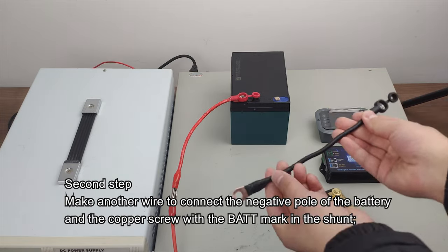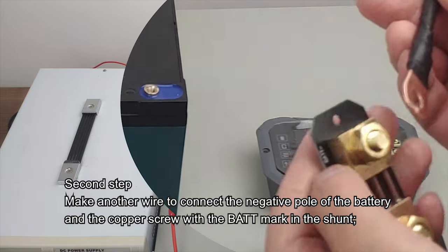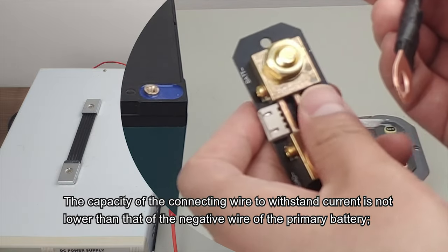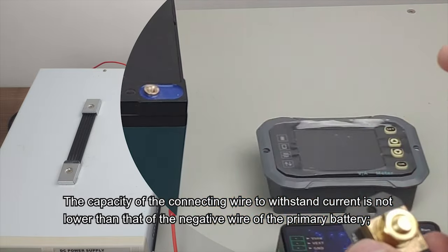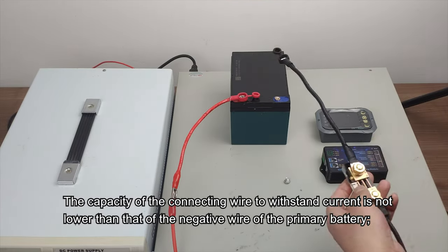Second step: Make another wire to connect the negative pole of the battery and the copper screw with the bat mark in the shunt. The capacity of the connecting wire to withstand current is not lower than that of the negative wire of the primary battery.